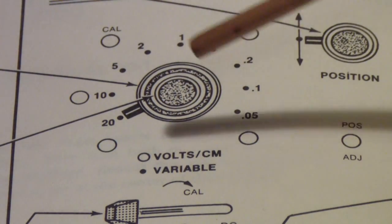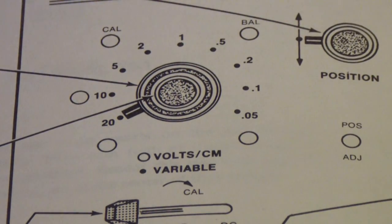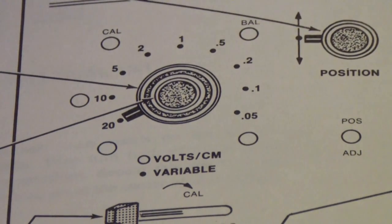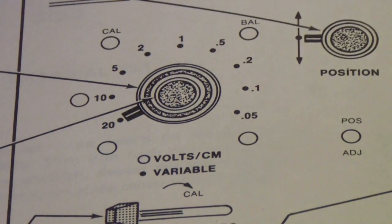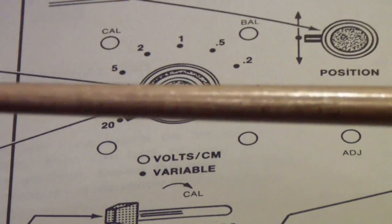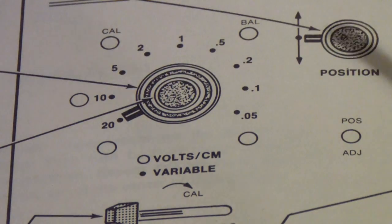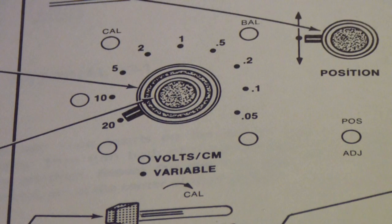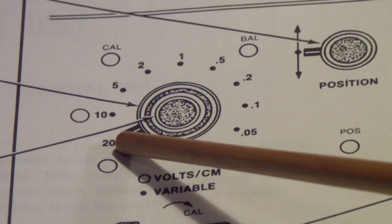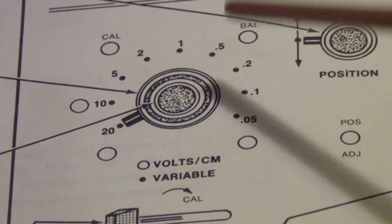But you also would have to calibrate the vertical attenuator. Usually, oscilloscopes like this had a calibration adjustment and a balance adjustment. The balance adjustment, as you would rotate this knob, the trace would move up and down the screen because of offsets in the circuitry. And so the purpose of the balance control was to compensate for those offsets, bring them all back to zero, so that as you went from the highest volts per division to the lowest volts per division, the trace would stay in the center.